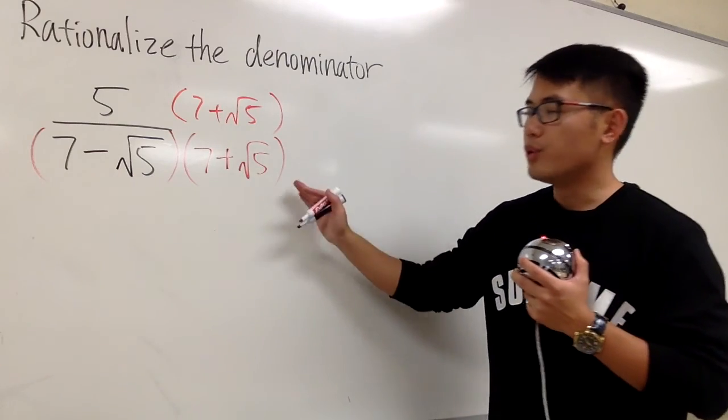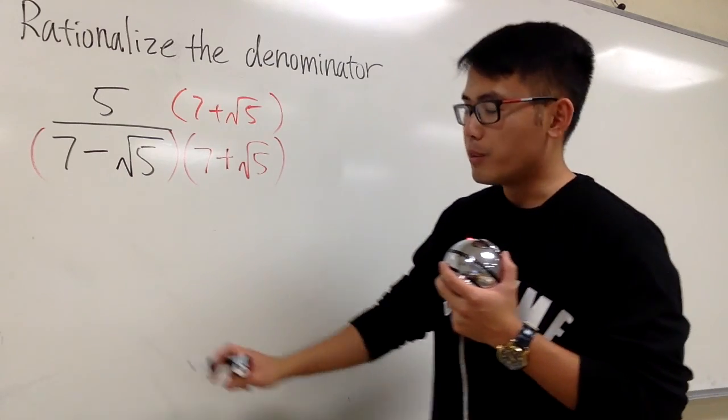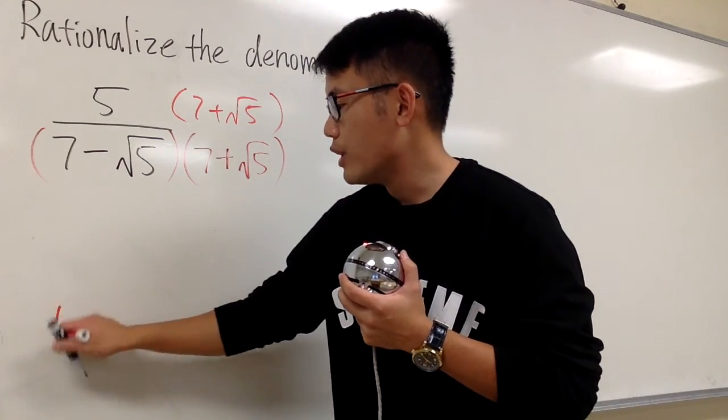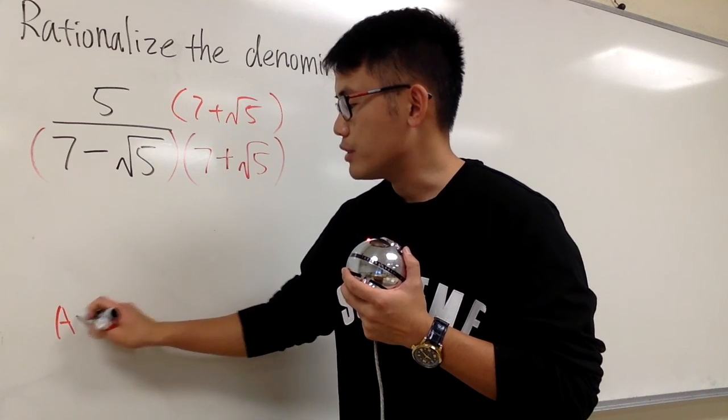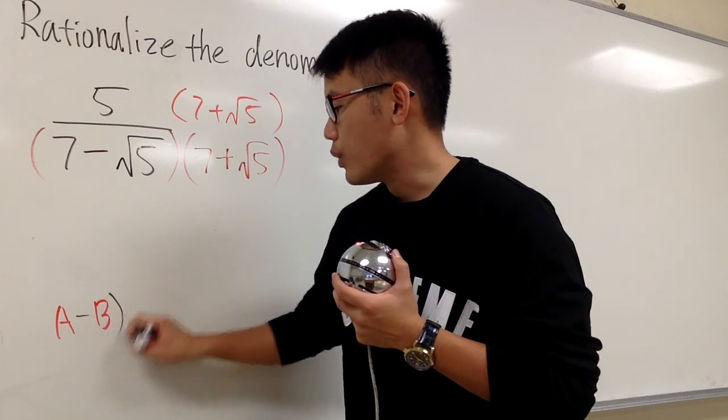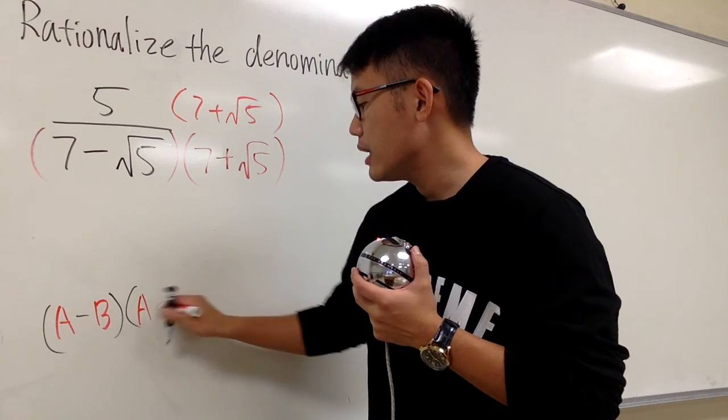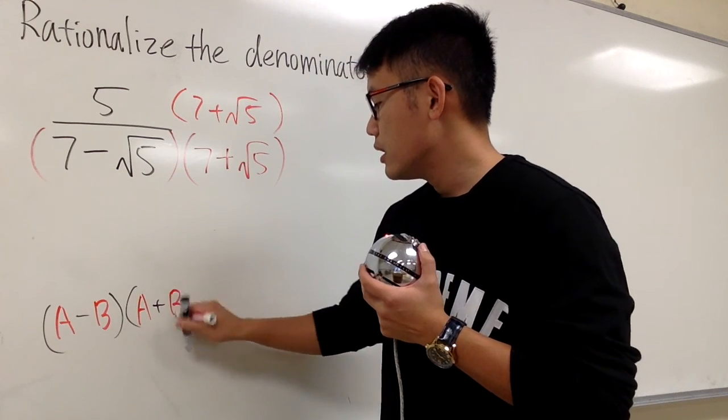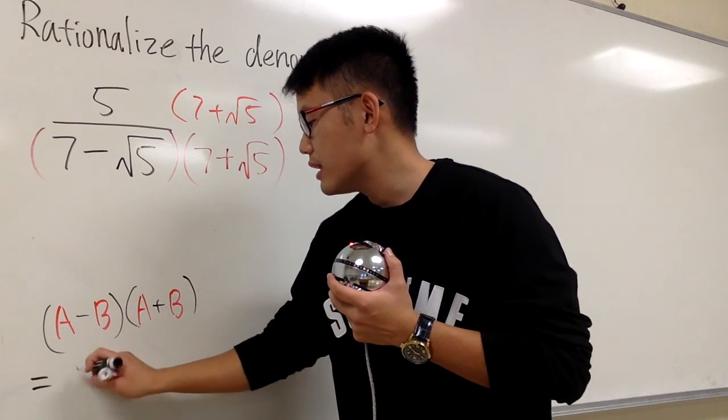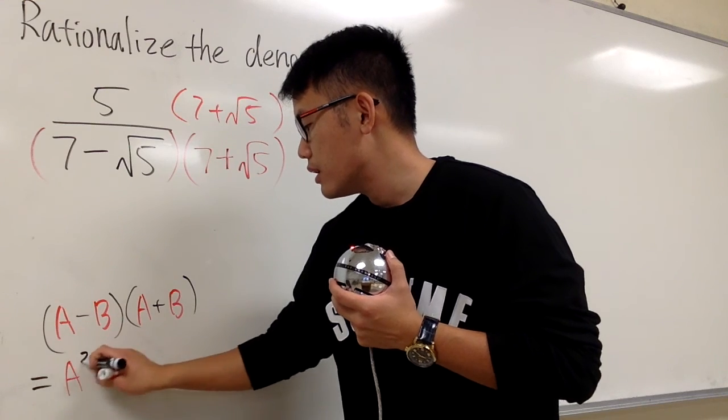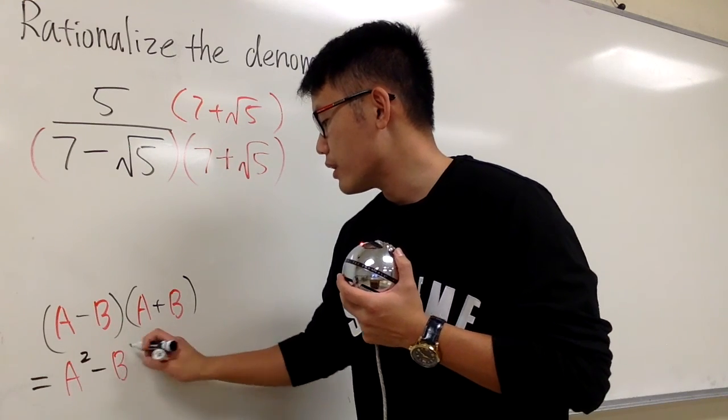And the idea of doing this is so we can use this formula. Let me just put it down real quick. We know a minus b, when we multiply this with a plus b, this is going to give us a squared minus b squared.